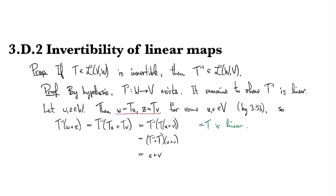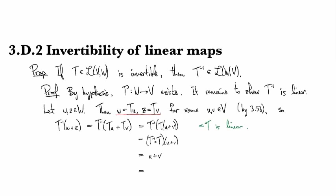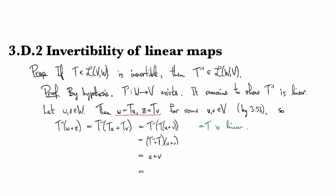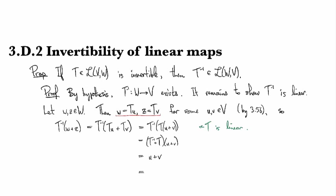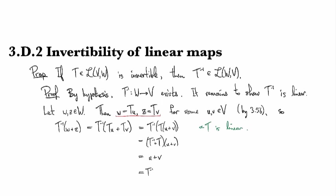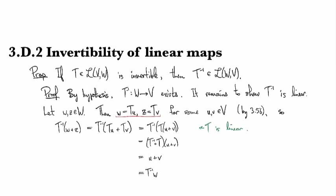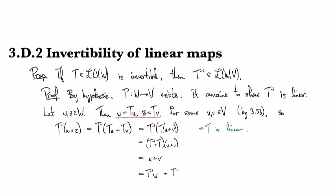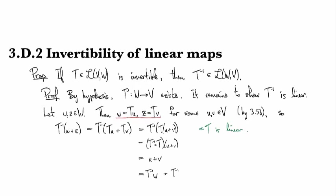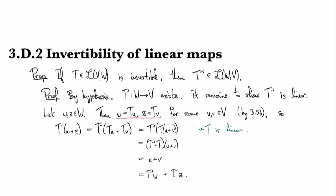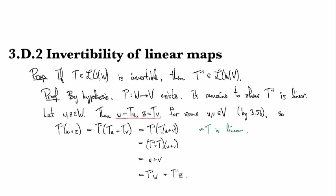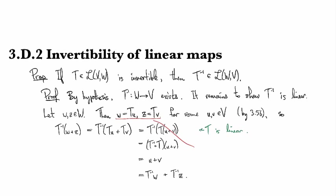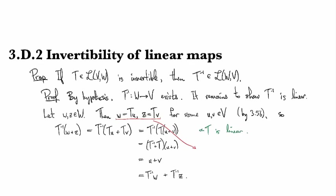And then u, recall—or wait, yeah, so u is T inverse of W, and v is T inverse of Z. And that's because I can take this and translate it.